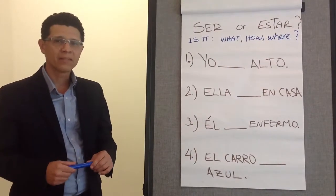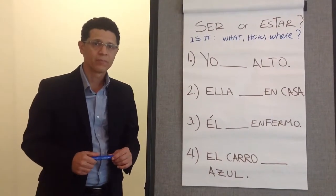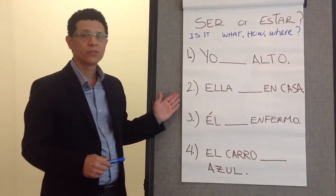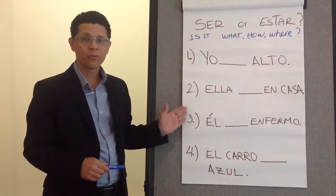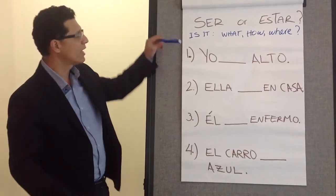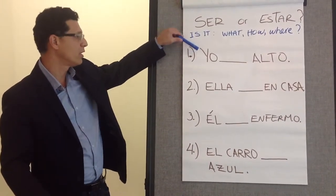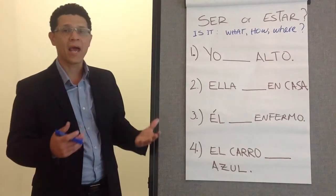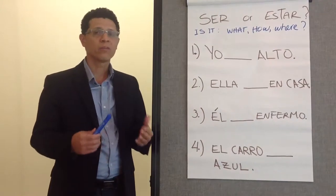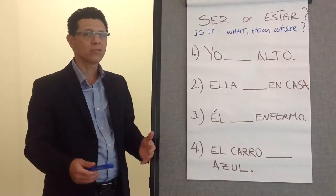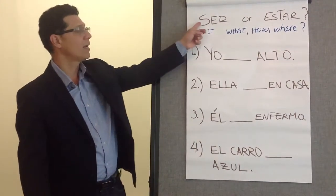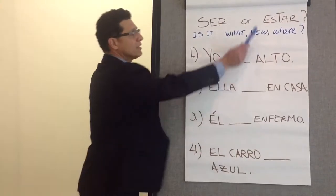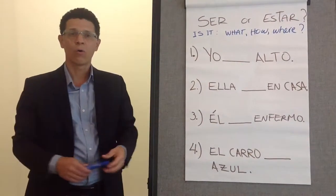Hi, my name is Javier Baez, director of SpanishTO.com. Today we're going to work with some examples of how to use the verbs ser and estar, 'to be' in English. According to the definition of the verb 'to be' in Spanish, you're going to have to use ser if it's a 'what', or estar if it's a 'how' or a 'where'.